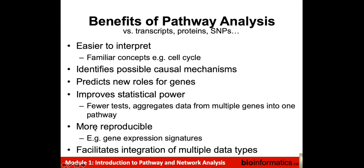Pathway and network analysis might also lead to more reproducible results. For instance, if we do multiple experiments on multiple samples, we might get different gene expression profiles for each sample or condition, but they might all affect the same pathways. Looking at the level of genes, we might not see exact replication across conditions, but looking at the level of pathways, we might see replication. Pathway and network analysis also facilitates integration of multiple data types in a multi-omics approach.